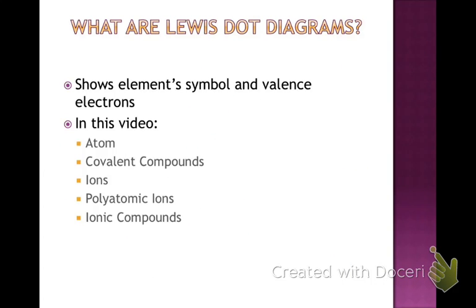Lewis dot diagrams show just the valence electrons and the symbol. In this video we will go over how to draw Lewis dot diagrams for atoms, for covalent compounds, for ions, polyatomic ions, and ionic compounds.